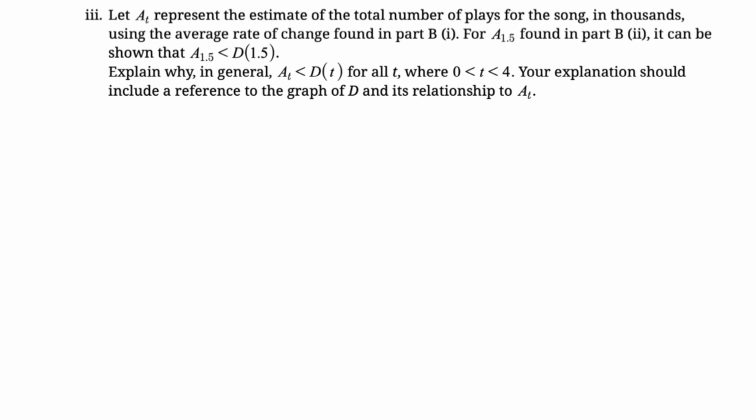The next part is A of T represents the estimate of the total number of plays for the song in thousands. Basically, they're just saying, look at your estimate that you got in the previous part. And we know that it's less than D of 1.5. And we want to explain why. Actually, we want to explain why in general A of T is less than D of T for all T between zero and four. And it says our explanation should include a reference to the graph of D and its relationship to A sub T. All right. So if you remember, we found that A was negative 1.25. That's actually all that matters, but we also found B and C. So since A is negative 1.25, this is a quadratic that opens down.